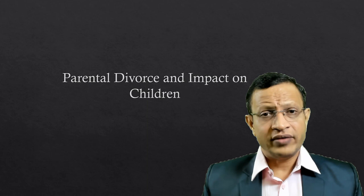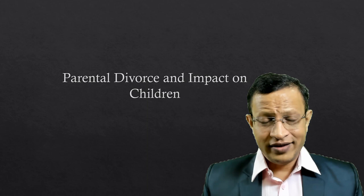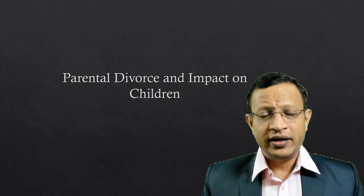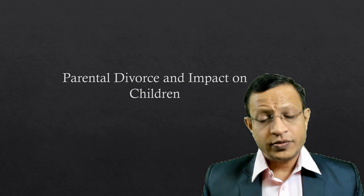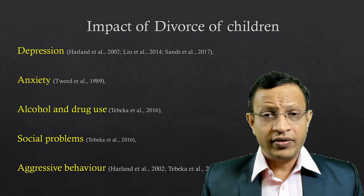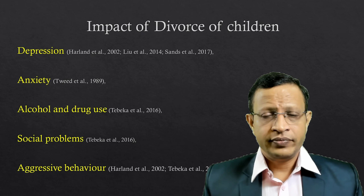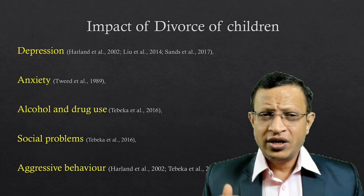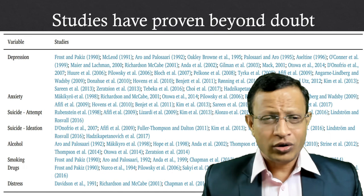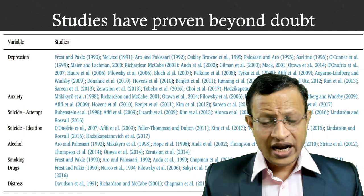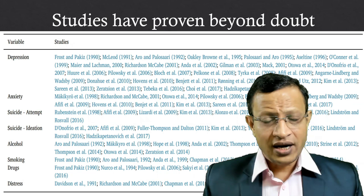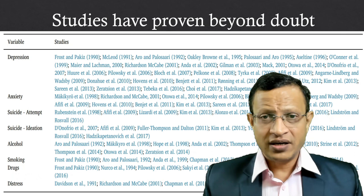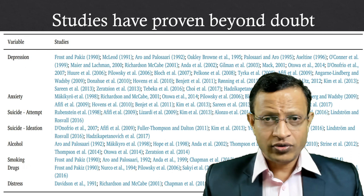Now let's discuss parental divorce and its impact on children. If a child is born in such a marriage and there is a child custody case, the laws of which country apply depends on where the child was born. The impact of divorce on children is huge — children go into depression, anxiety, alcohol and drug abuse, social problems, aggressive behavior. There will be academic impact, detachment from family, parental alienation syndrome, and the child may look for love outside the family, leading to teenage pregnancy and drug abuse.